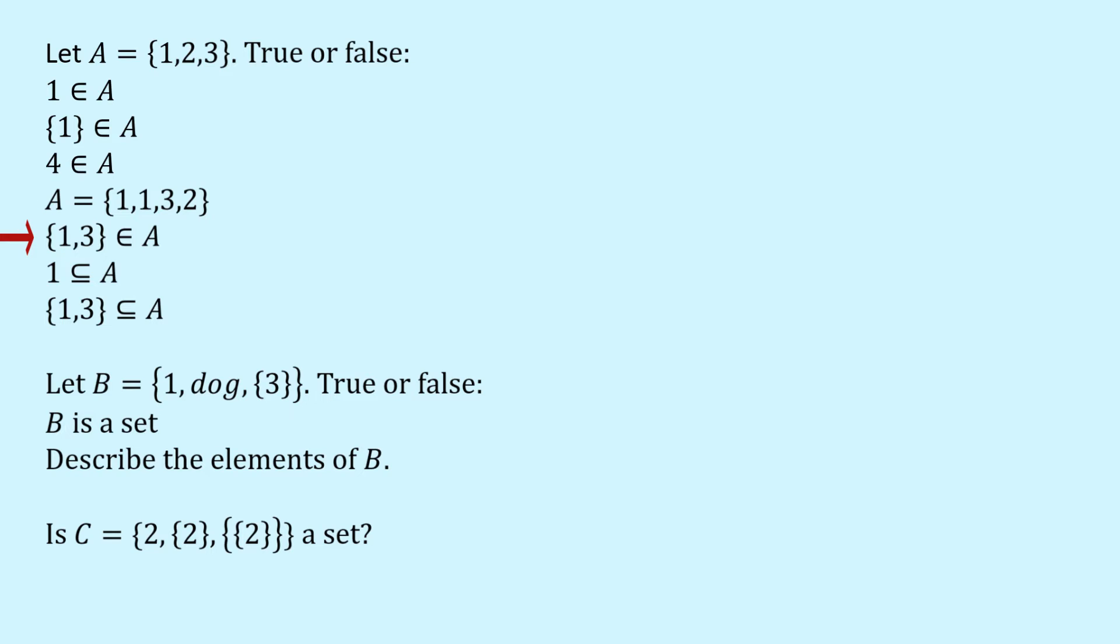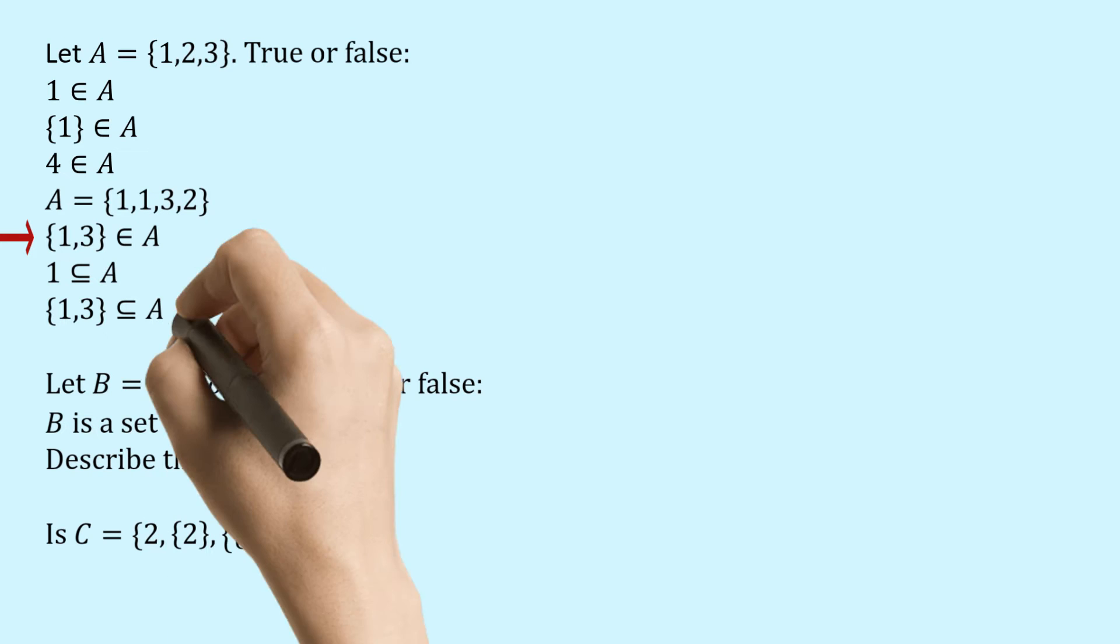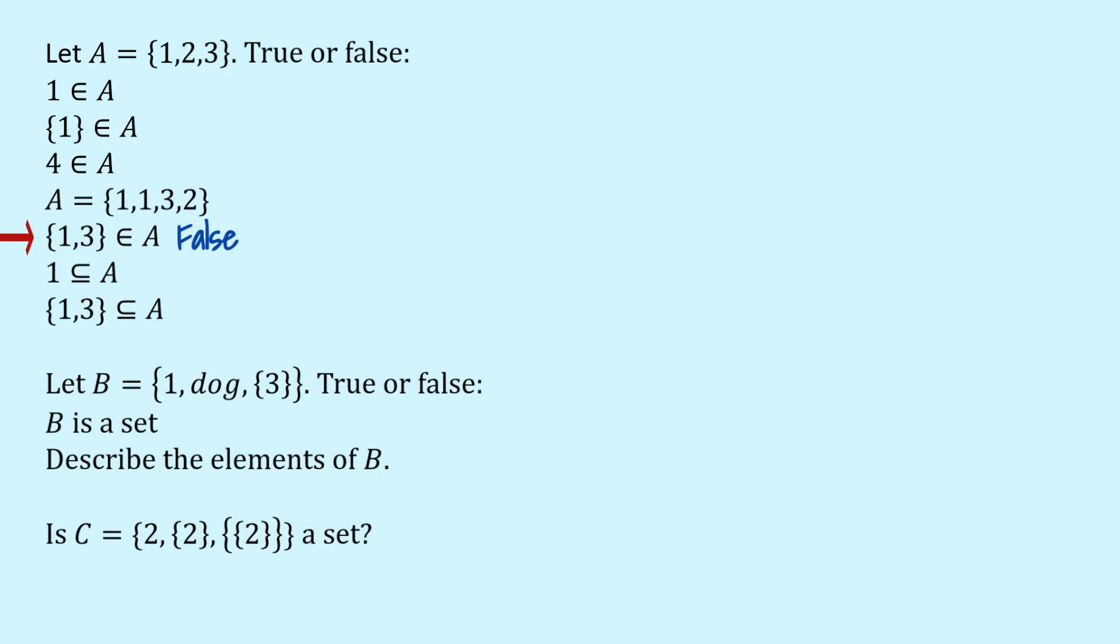What about this statement? The set containing the numbers 1 and 3 is an element of A. Well this is false. As we said A only contains three elements the numbers 1, 2 and 3.